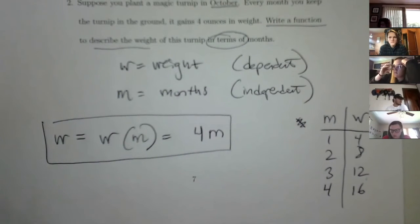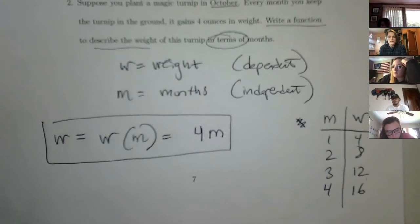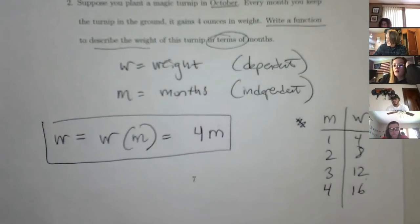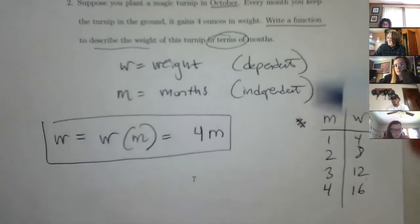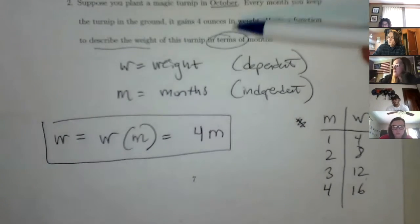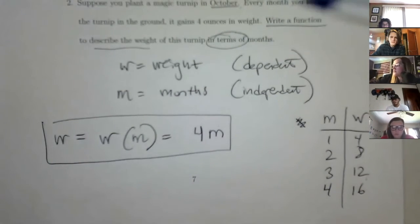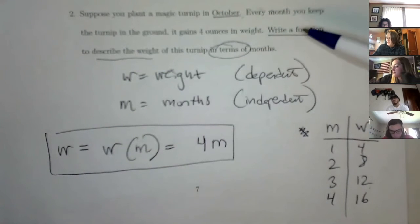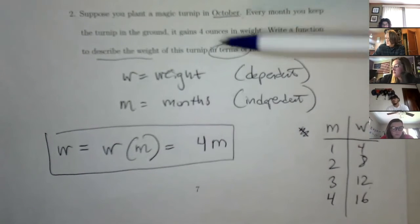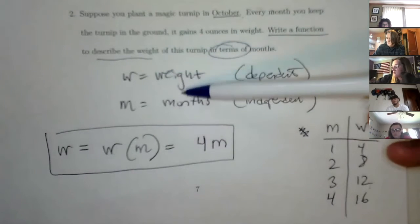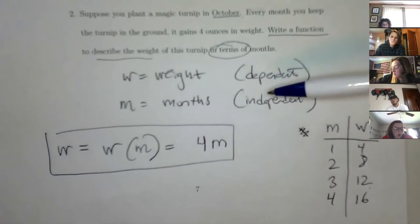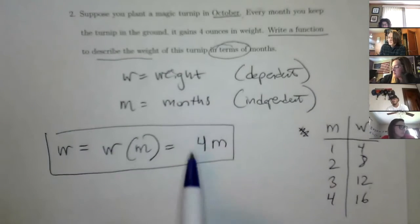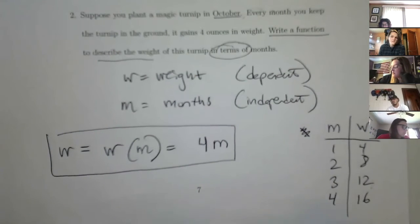Any issues with that? It's a good example because it goes through the steps of writing a function — something we'll be doing all semester. So know how to interpret a word problem like this: identify what the variables are, determine which is dependent and independent, then find a relationship and define a function.